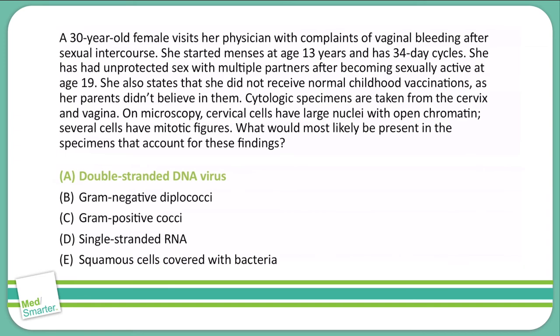A is the correct answer, as this is a malignant transformation of normal cells. We're seeing increased nuclear-to-cytoplasm ratios, open chromatin, and mitotic figures that tell us these cells are actively dividing. Since she has a history of multiple sexual partners, post-coital bleeding, and never received the HPV vaccination, this is most likely an HPV infection that has led to cervical cancer. And HPV, once again, is a double-stranded DNA virus.